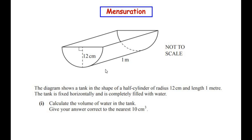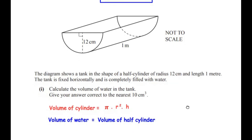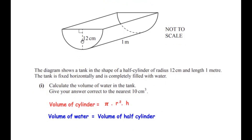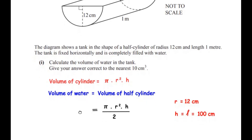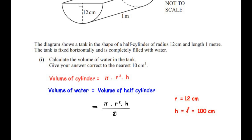Let us begin by writing the formula for volume of a cylinder, which is π × r² × h, where r is the radius and h represents the height or length of the cylinder. But here a half cylinder is given, so the volume of water equals the volume of half a cylinder. We divide the formula by 2, giving us: volume of half a cylinder = π r² h / 2.